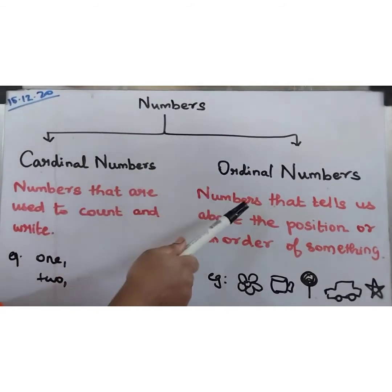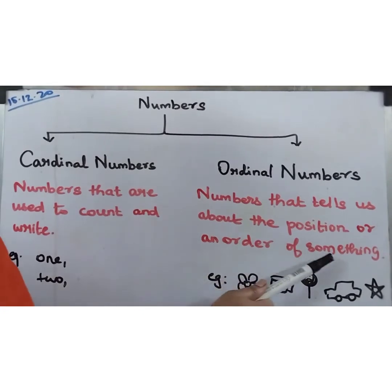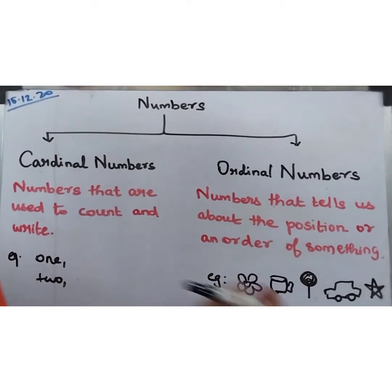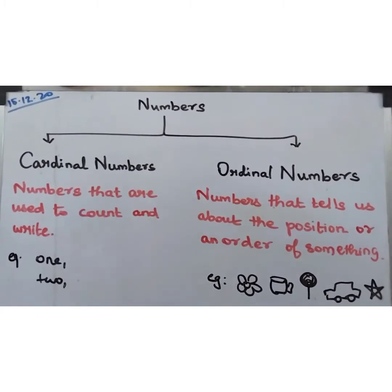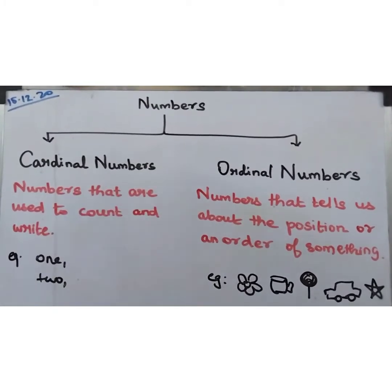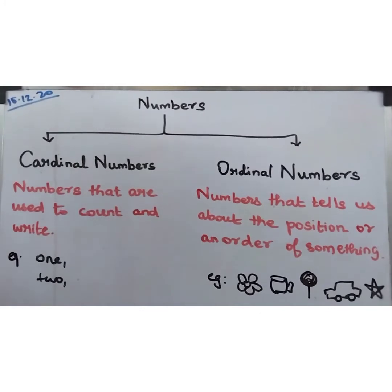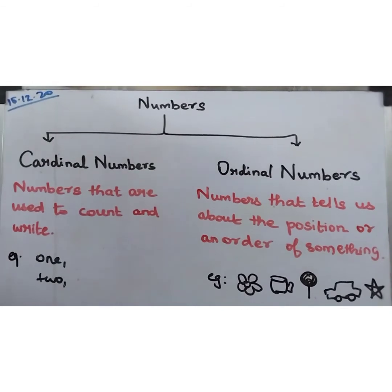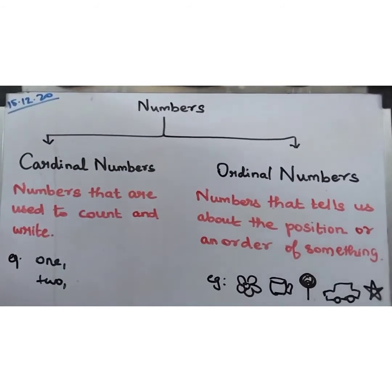And what are ordinal numbers? Numbers that tell us about the position or order of something. In a position, like what rank you got — I got first rank, I got second rank, I got third rank. Numbers that tell us the position or order of something. Which class are you studying? I am studying in third standard, and I am studying in first standard, and I am studying in second standard. These are the position or order of something.